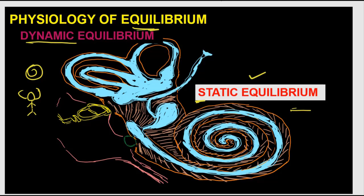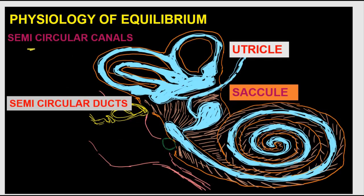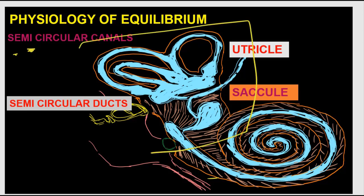There are two types of equilibrium: static and dynamic. The receptors for both static and dynamic equilibrium are placed in the inner ear. Collectively, the inner ear structures concerned with dynamic and static equilibrium are called the vestibular apparatus. Three areas of the vestibular apparatus are: the utricle, the saccule, and the semicircular ducts.